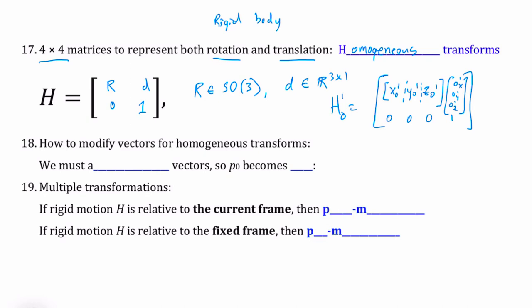Now we have to do a little bit of modification for our vectors to do a homogenous transform, and what we do is we just augment our vectors. So P0 becomes P, capital P, in frame 0, and what we do there is we just augment it with a 1. So we just take P in frame 0, and then we add a 1 after that.